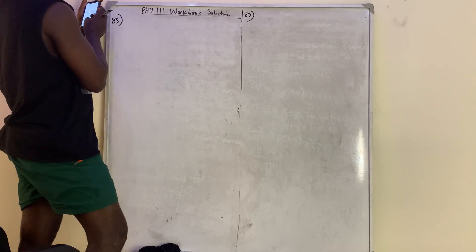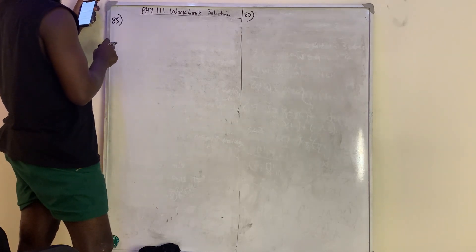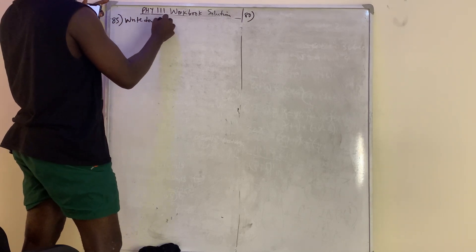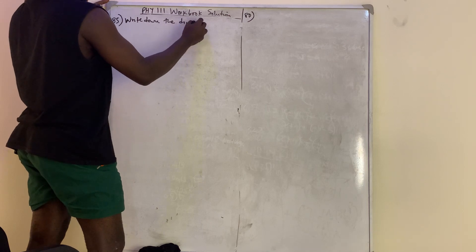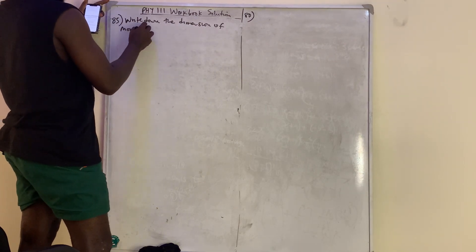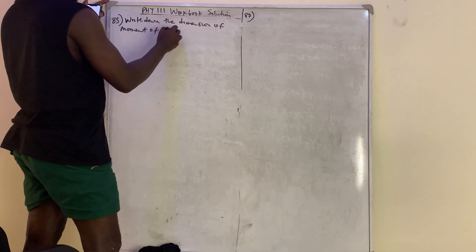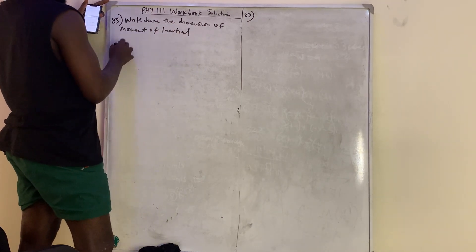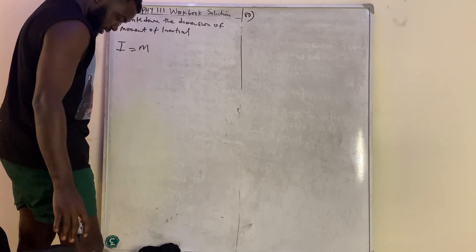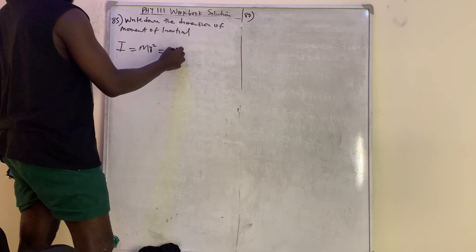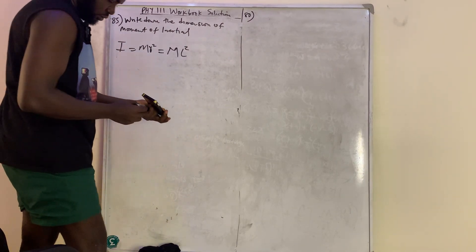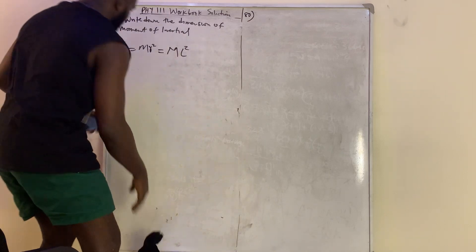Question number 85: write down the dimension of moment of inertia. Moment of inertia equals mr squared, so m is mass and r is L², therefore the dimension of moment of inertia is ML².